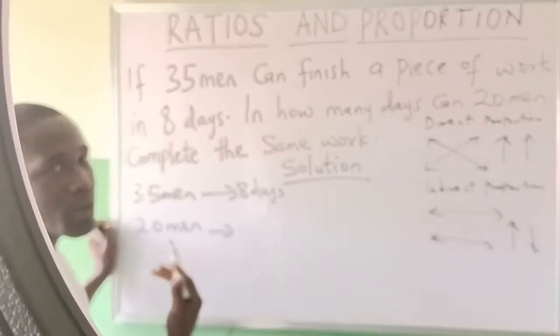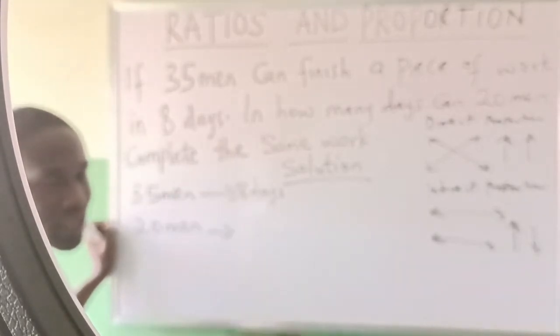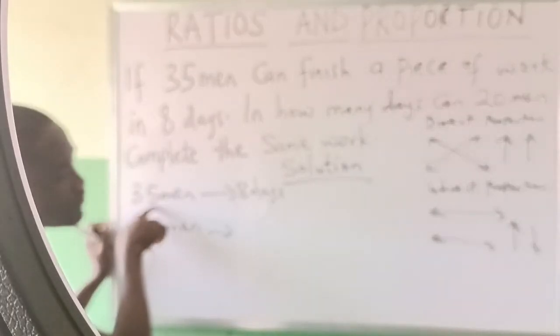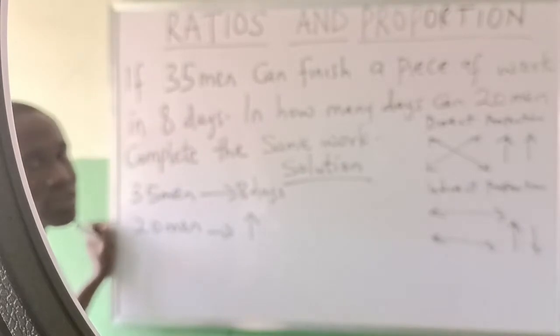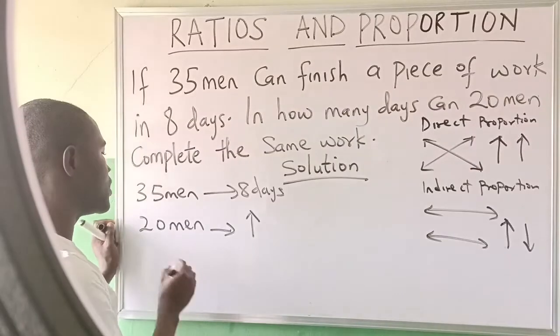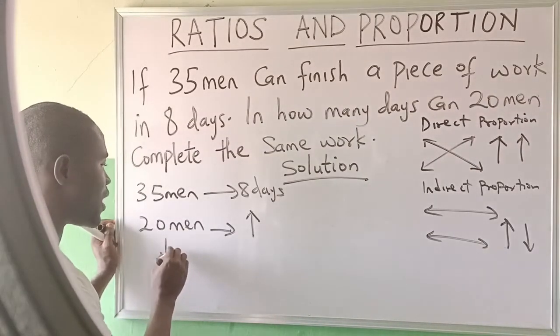You can see with me that 20 is less than 35, so they'll finish it in more than 8 days. That means the lower the number of men, the higher the number of days needed to finish it.